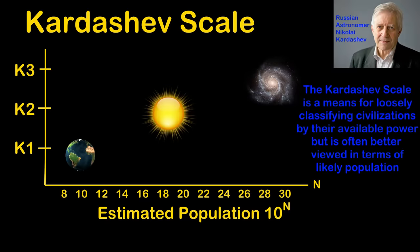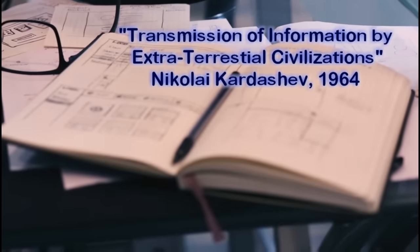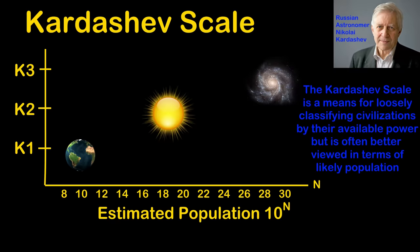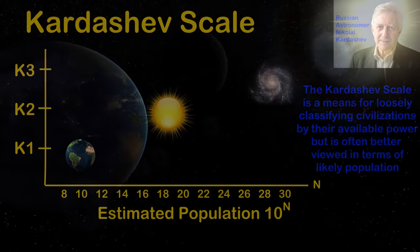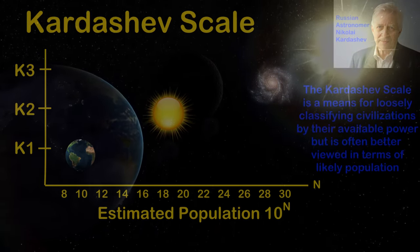I doubt he expected it to go into common usage, or likely he would have scaled it better. I will link the English translation of the original 1964 paper, 'Transmission of Information by Extraterrestrial Civilizations,' in the episode description. It will put context on why it seems like I am being critical of the scale but not of Kardashev himself. The scale itself is a quick aside to give a general notion of what we ought to be looking for when looking for alien civilizations. He does not even care about our own, which does not even make it onto the scale as a Type 1 civilization, let alone anything pre-technological.